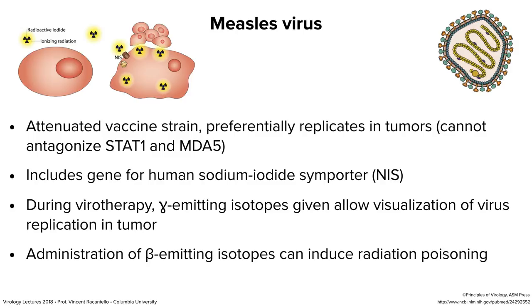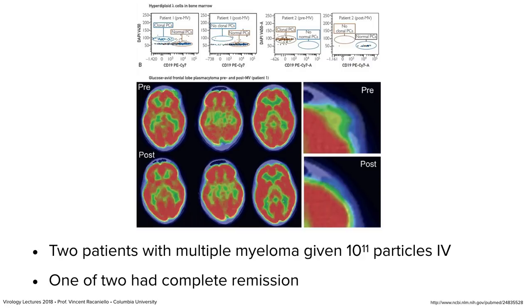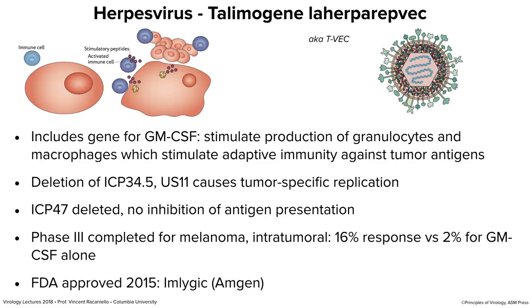In a trial treating two patients with multiple myeloma using 10 to the 11th particles of measles virus intravenously, flow cytometry showed elimination of clonal plasma cytoid cells in both patients post-treatment. One patient had a mass on her right frontal lobe that disappeared after treatment. One of these individuals achieved a complete remission. This is a remarkable demonstration of viral oncotherapy.